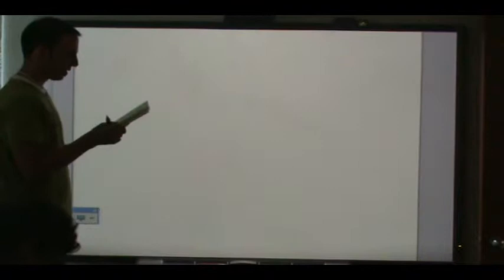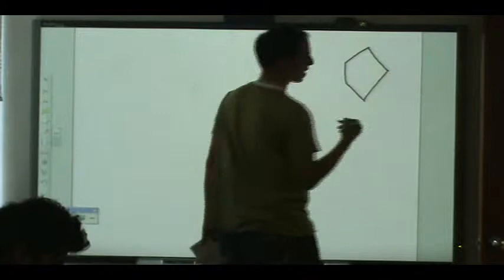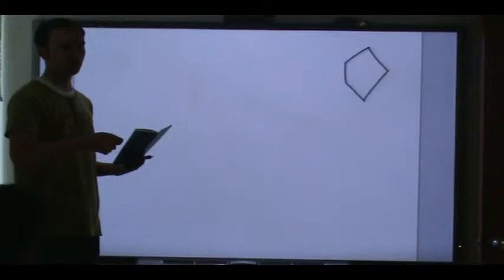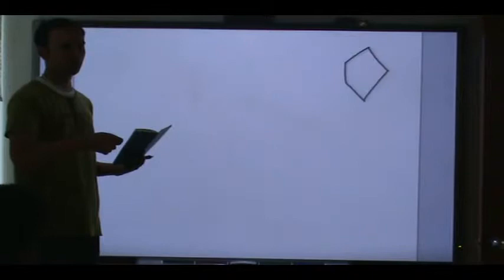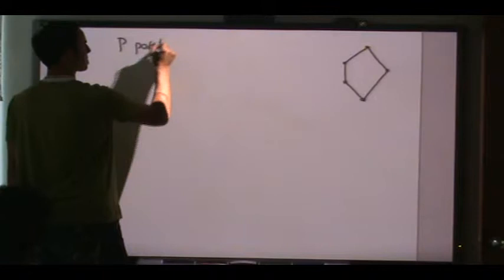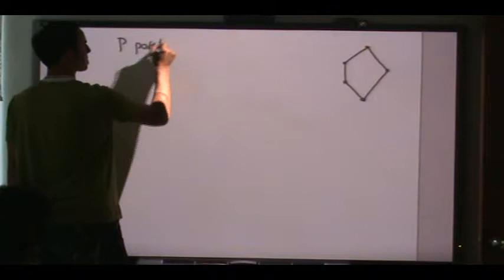Now I need to give you background on posets before stating the next theorem. In the picture of a poset, edges are always directed upward, so I don't need to draw arrows — you always put the lower element below the bigger. Let me define: what is a chain?